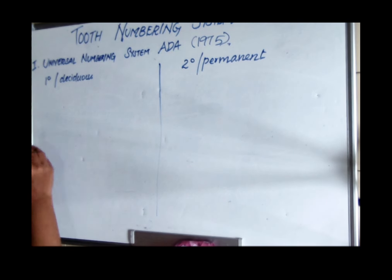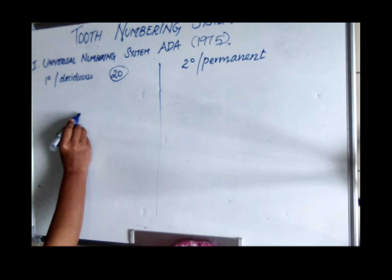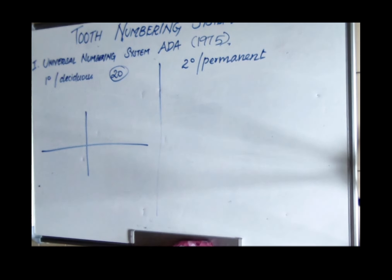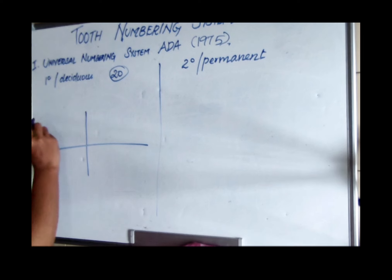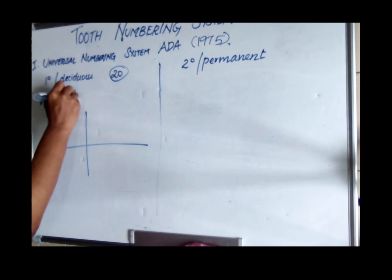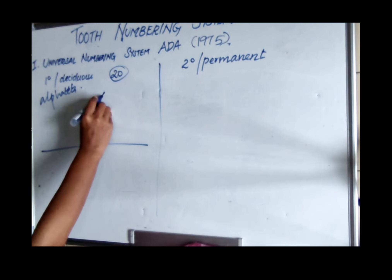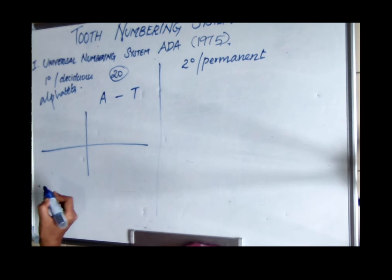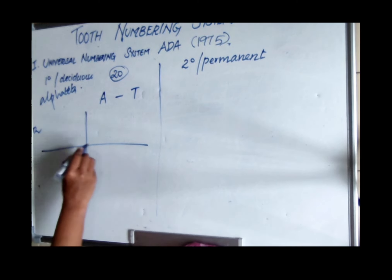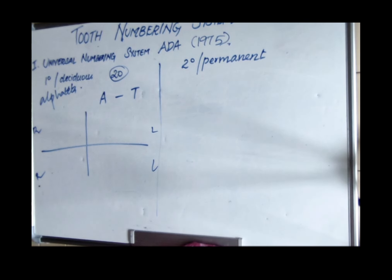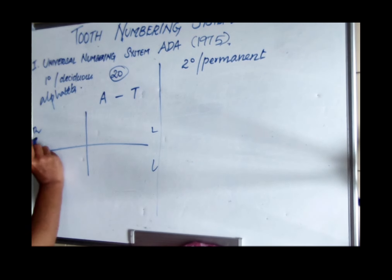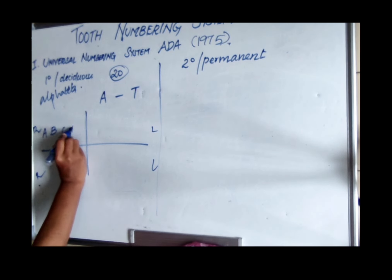In the Universal system, primary and permanent dentitions have separate numbering. For the primary dentition, which has twenty teeth divided into upper and lower arches and right and left quadrants, alphabets are used — from A to T. Numbering starts from the maxillary right second molar, going A through E in the first quadrant.